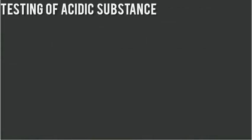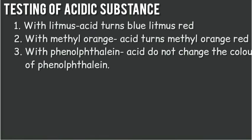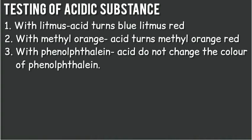Testing of acidic substances: indicators are used to test substances. An indicator tells us the nature of a substance by changing color. With litmus, acid turns blue litmus red. With methyl orange, acid turns methyl orange red.